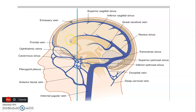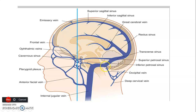The inferior sagittal sinus, found at the concavity of the falx cerebri, is joined by the great cerebral vein of Galen to form the straight sinus (sinus rectus). The superior sagittal sinus and straight sinus meet at the confluence of sinuses at the internal occipital protuberance. From there, blood from the superior sagittal sinus typically forms the right transverse sinus, which is bigger. The transverse sinuses are joined by the superior petrosal sinuses to form the sigmoid sinus, which is S-shaped.